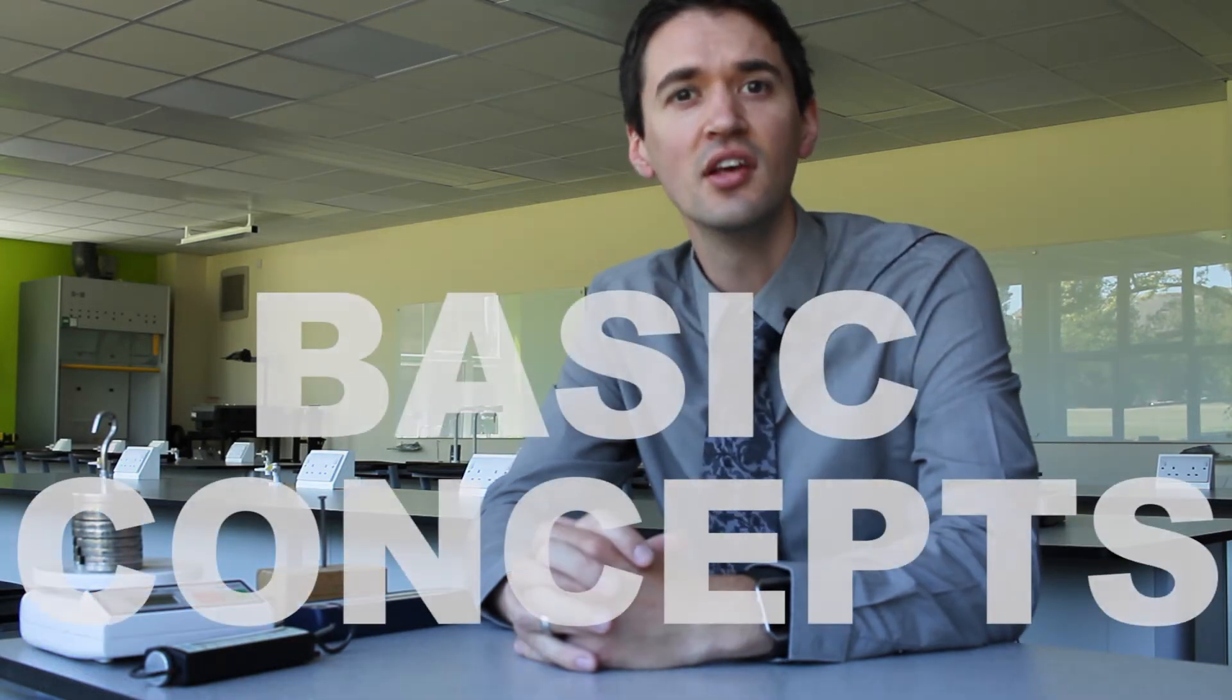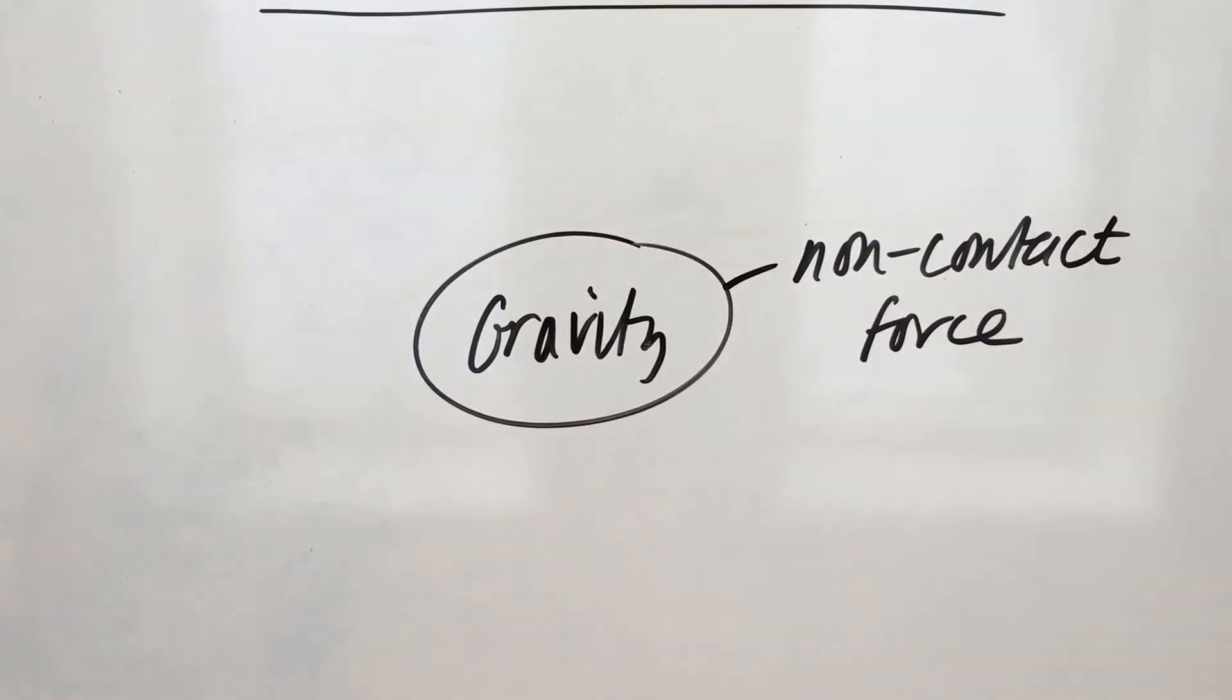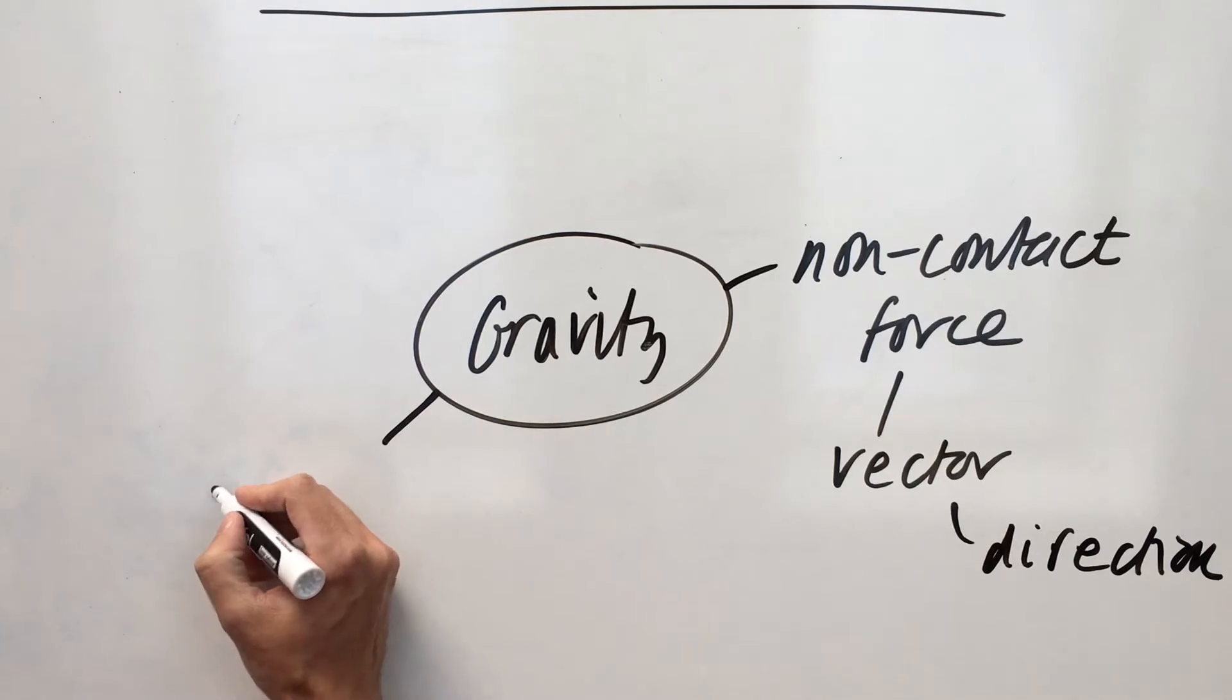Basics about gravity are that it's a non-contact force, and that because it's a force, it's a vector quantity. The next thing you have to know about gravity is that everything in the universe with mass attracts every other object in the universe with mass.